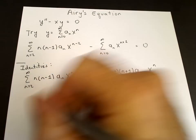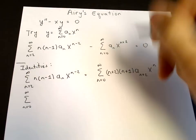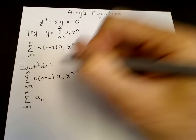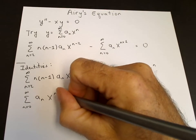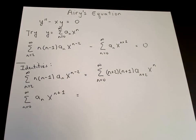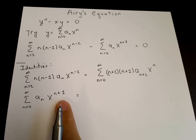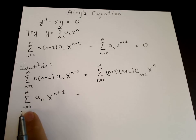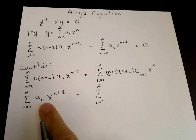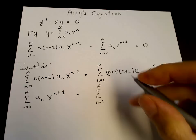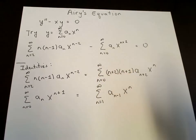We do the same thing with the second series: the sum from n equals zero to infinity of a sub n x to the n plus one. Here the power starts at one, so instead of zero we shift up to one: the sum from n equals one to infinity of a sub n minus one times x to the n.